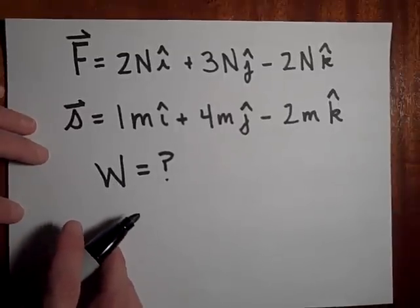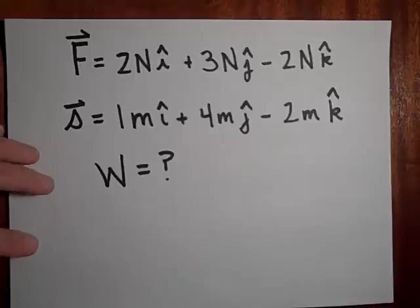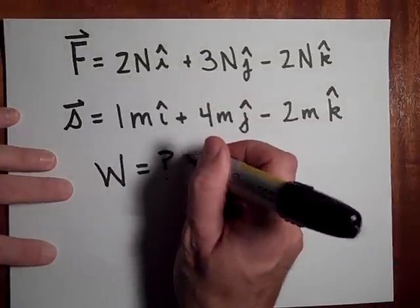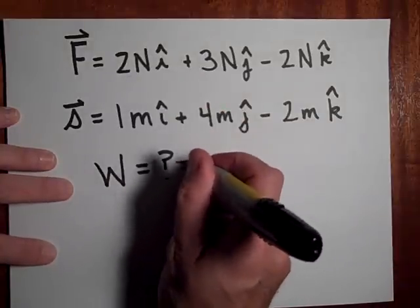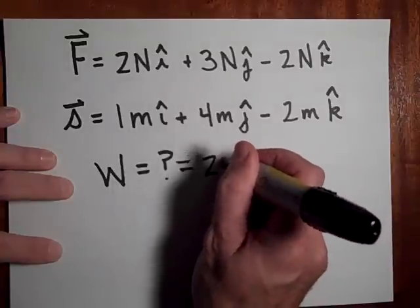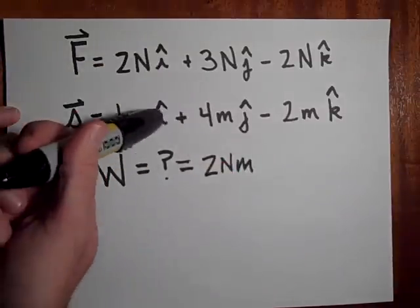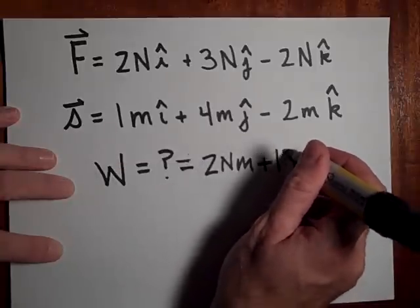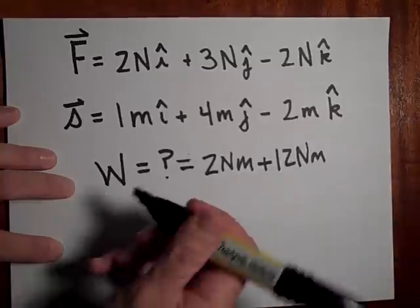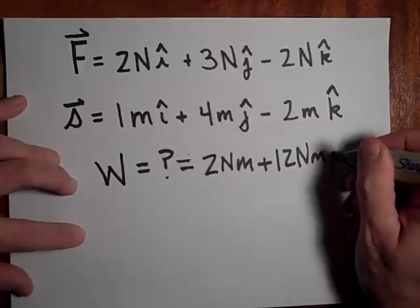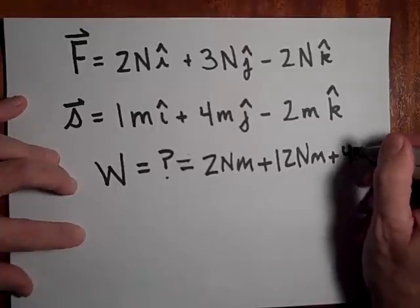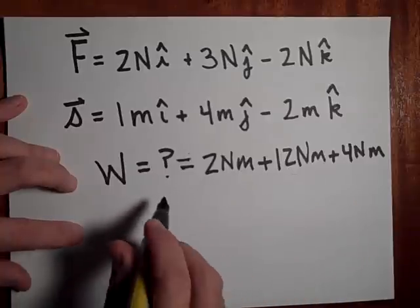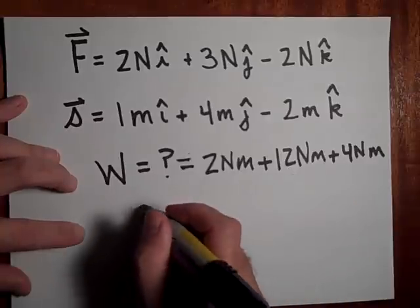So go ahead and pause and try to find the work done. Okay, hopefully you did this. You multiplied the two i's together, so that gives you 2 Newton meters. Plus the two j's multiplied together, so that's 12 Newton meters. Plus the two k's multiplied together, so that's plus 4 Newton meters. So that's going to give me 2, 14, 18 - 18 Newton meters.